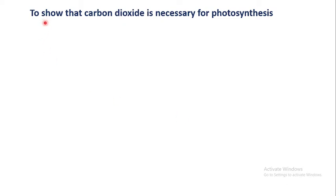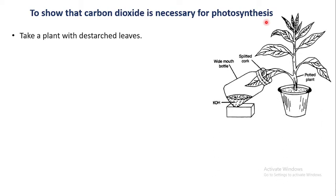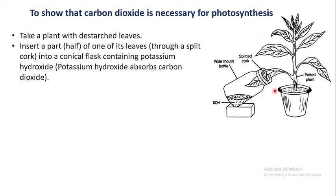The next experiment is to show that carbon dioxide is necessary for photosynthesis. Take a destarched plant and insert half of one of its leaves into a conical flask or jar containing potassium hydroxide (KOH). The potassium hydroxide absorbs all the carbon dioxide present in the air inside the jar, so that half of the leaf is not exposed to any carbon dioxide.